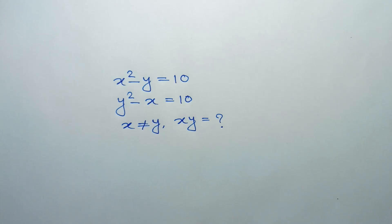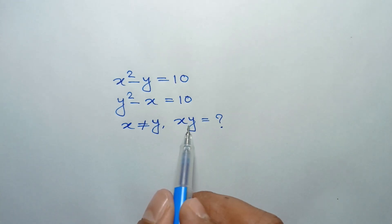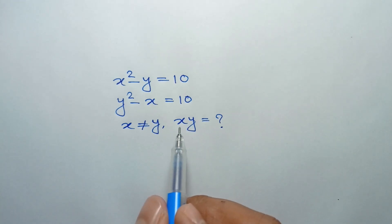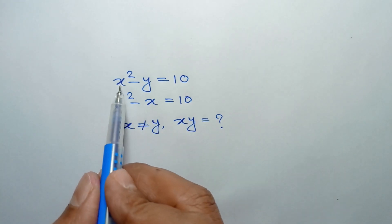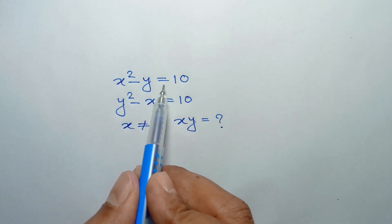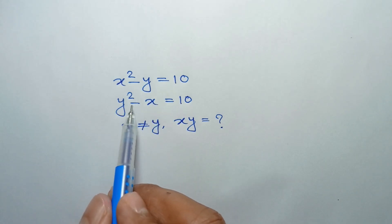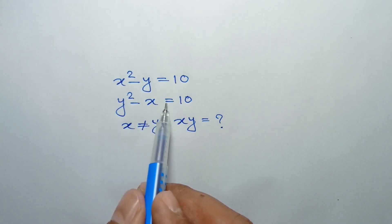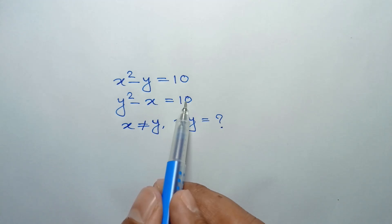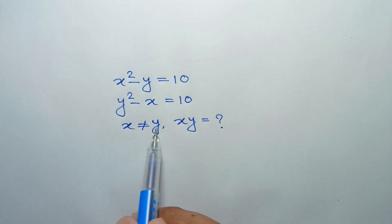Hi everyone. In this video I am going to show how to find the value of x and y, where x squared minus y is equal to 10 and y squared minus x is equal to 10, and x is not equal to y.